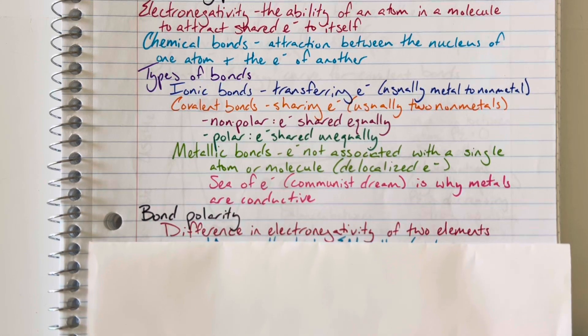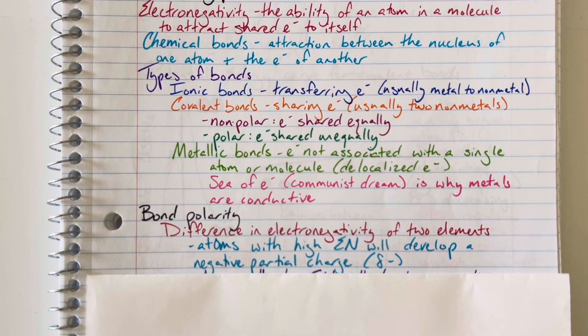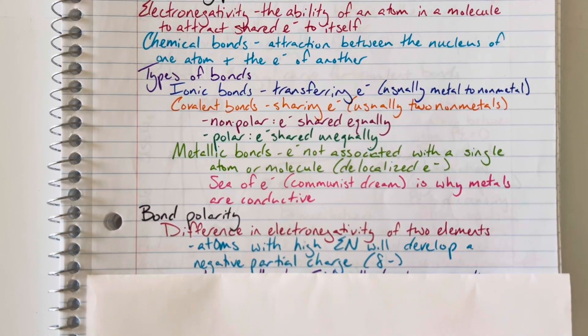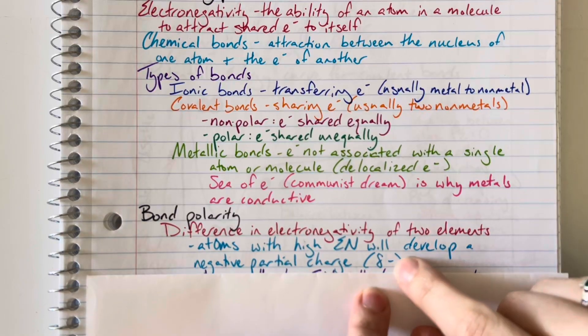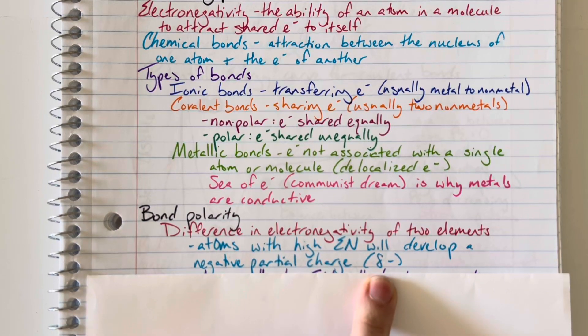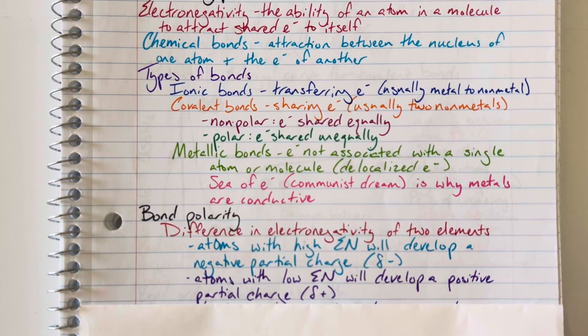Bond polarity is determined by the difference in electronegativity of the two elements within that bond. Atoms that have a high electronegativity will develop a partial negative charge. It's important that you know I didn't just fail to draw an eight. This is what it looks like - an eight where you kind of failed to complete that last portion. That is a lowercase delta, and it denotes a partial charge. Atoms with a high electronegativity tend to develop a partial negative charge, which is denoted by that lowercase delta. Whereas atoms with a low electronegativity will develop a partial positive charge, signified by the lowercase delta and a positive sign.